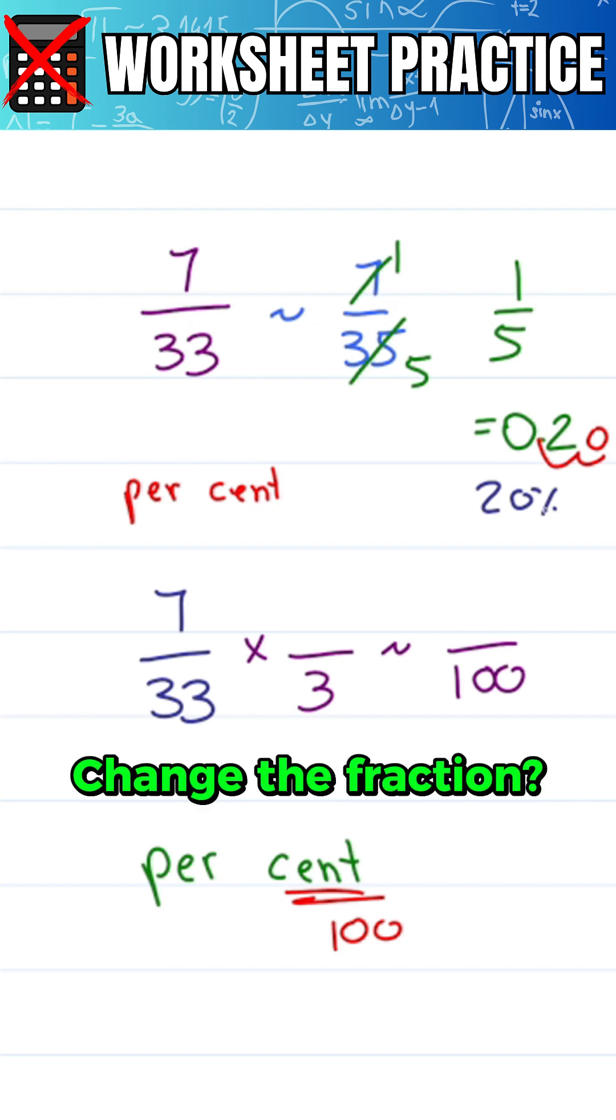But how can I simply change the fraction? Very simple. If I multiply by a number over itself, that number is equal to 1 and doesn't change the value.